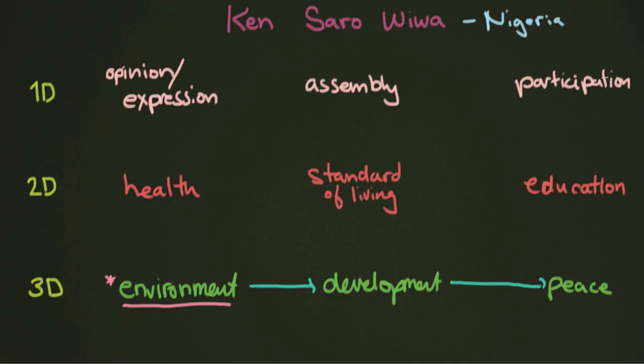And so this third dimension was an area where obviously there were problems at the other dimensions, but this third dimension was particularly being violated, not just by the company, but even by members of the government, or at least in the opinion of Ken Saro-Wiwa. So he decided in 1991, he was going to do something about it. So he stepped up and started becoming an activist.